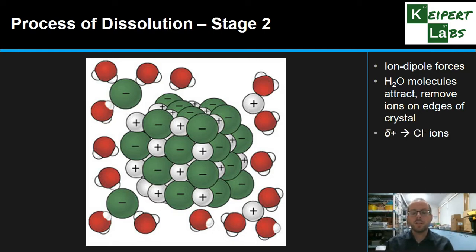The delta positive end of the water molecule will be attracting and starting to remove those chloride ions. And the delta minus negative end will be attracting the positive sodium ions. You can see that the white hydrogen parts are what's interacting over here, and the red oxygen parts are what's interacting over here.